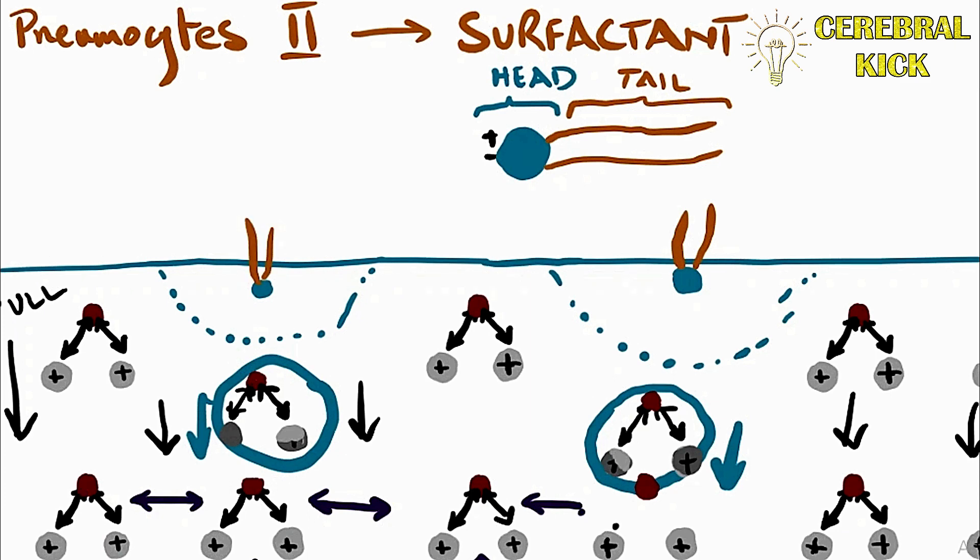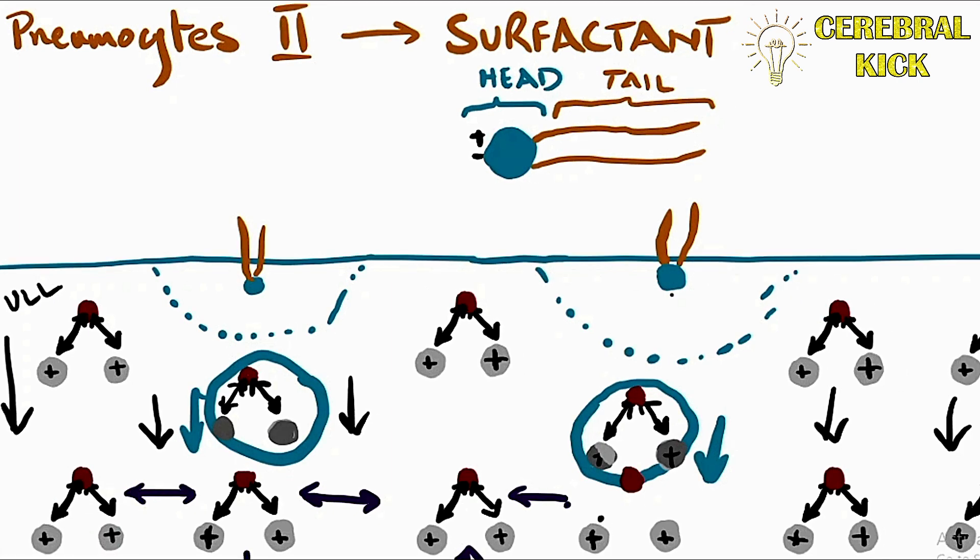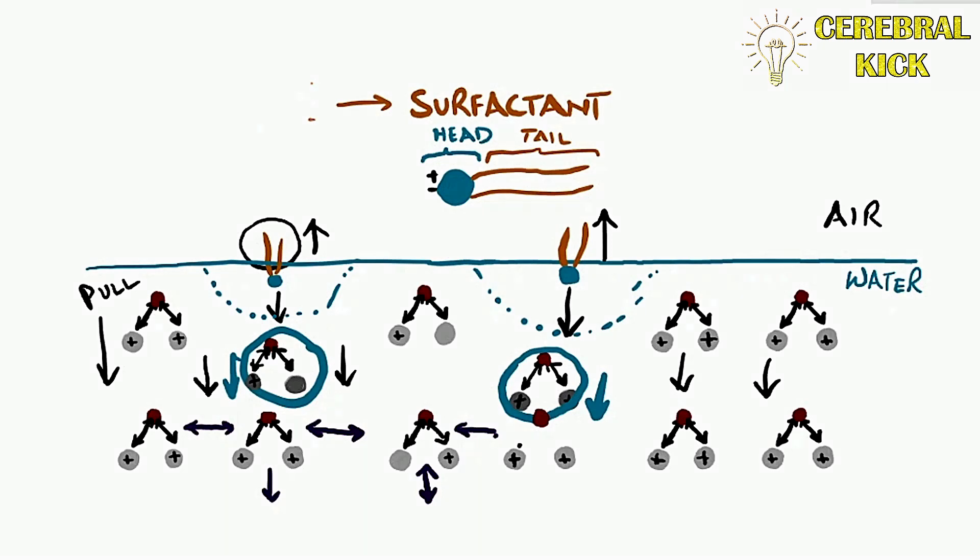Now, the hydrophilic part of the surfactant is pulled downwards by the other water molecules. However, in terms of surfactant, it's got an opposing force in the form of hydrophobic tail. As a result, the surfactant remains on the surface of the water air interface and prevents any inward or downward force from collapsing the alveolus.